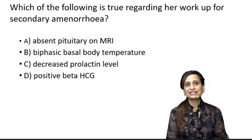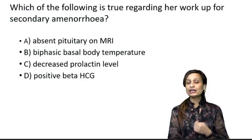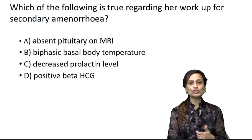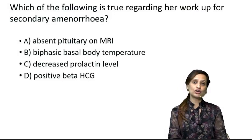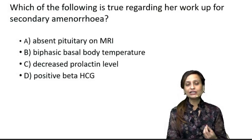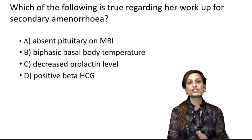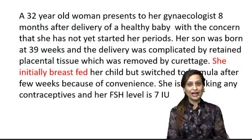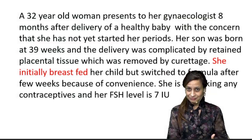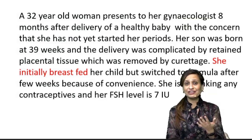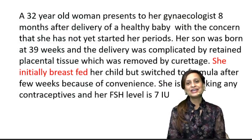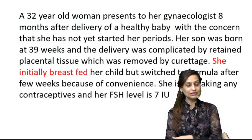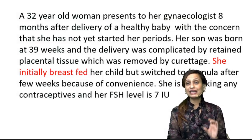How do we rule out option C — decreased prolactin levels — and option A — absent pituitary on MRI? Both options suggest the pituitary gland is not functioning normally. The key keyword that tells us the pituitary is functioning normally is that she was initially able to breastfeed. So her pituitary gland is absolutely normal, prolactin levels cannot be low, and an FSH of 7 — which is normal — would not be possible if the pituitary were malfunctioning.